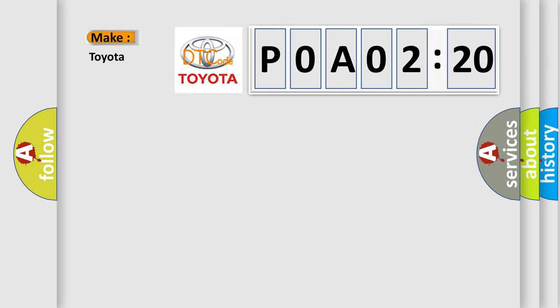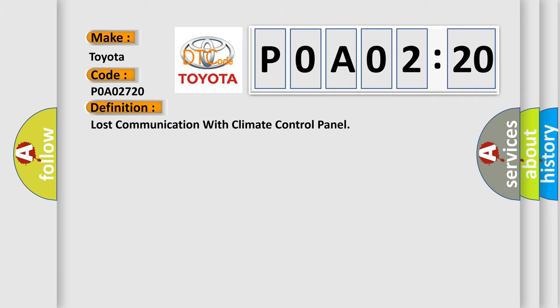So, what does the Diagnostic Trouble Code P0A02720 interpret specifically for Toyota car manufacturers? The basic definition is lost communication with climate control panel.